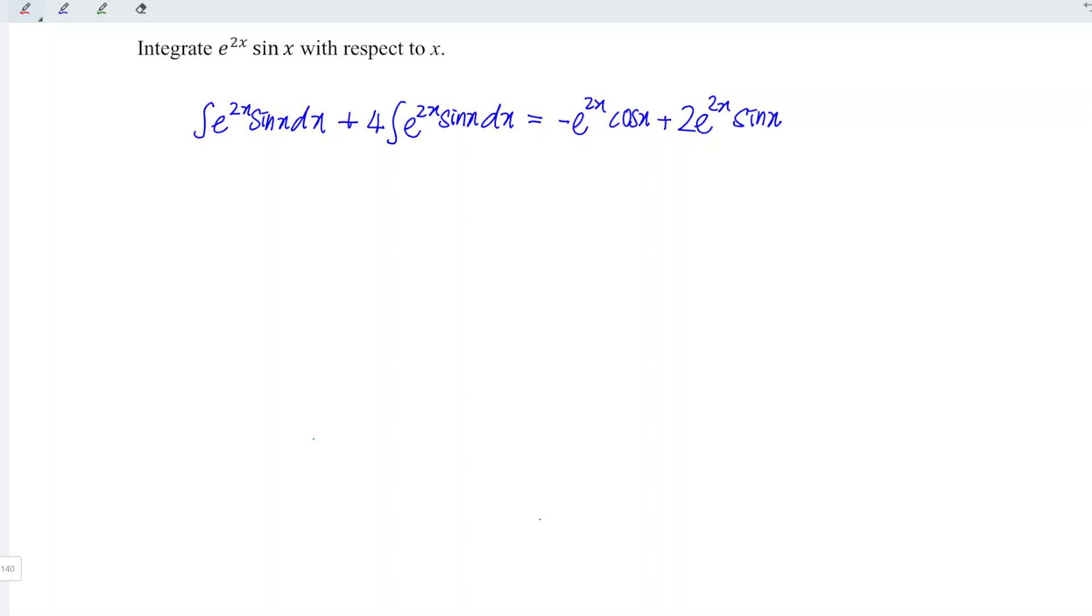Next, let's simplify both sides. So we have 1 plus 4, which is equal to 5, times integrate e to the power of 2x sin x with respect to x.